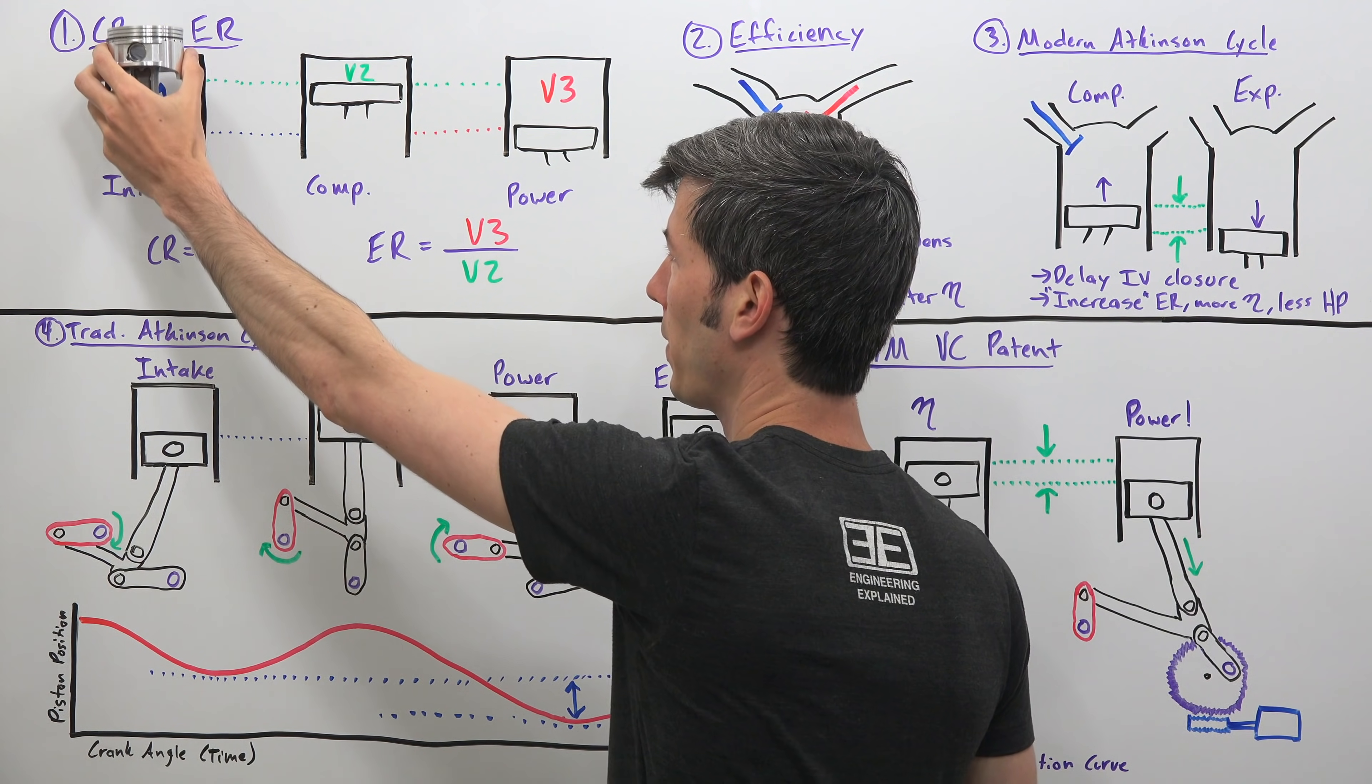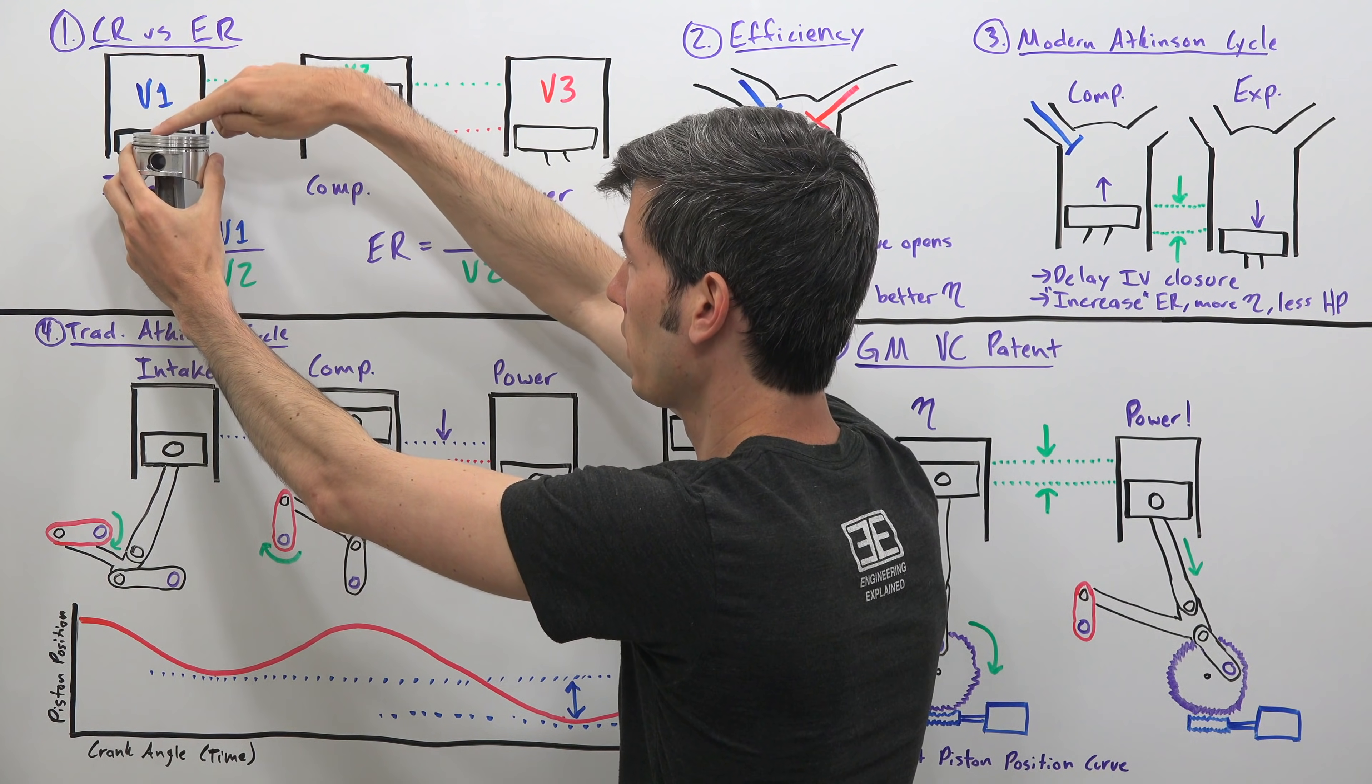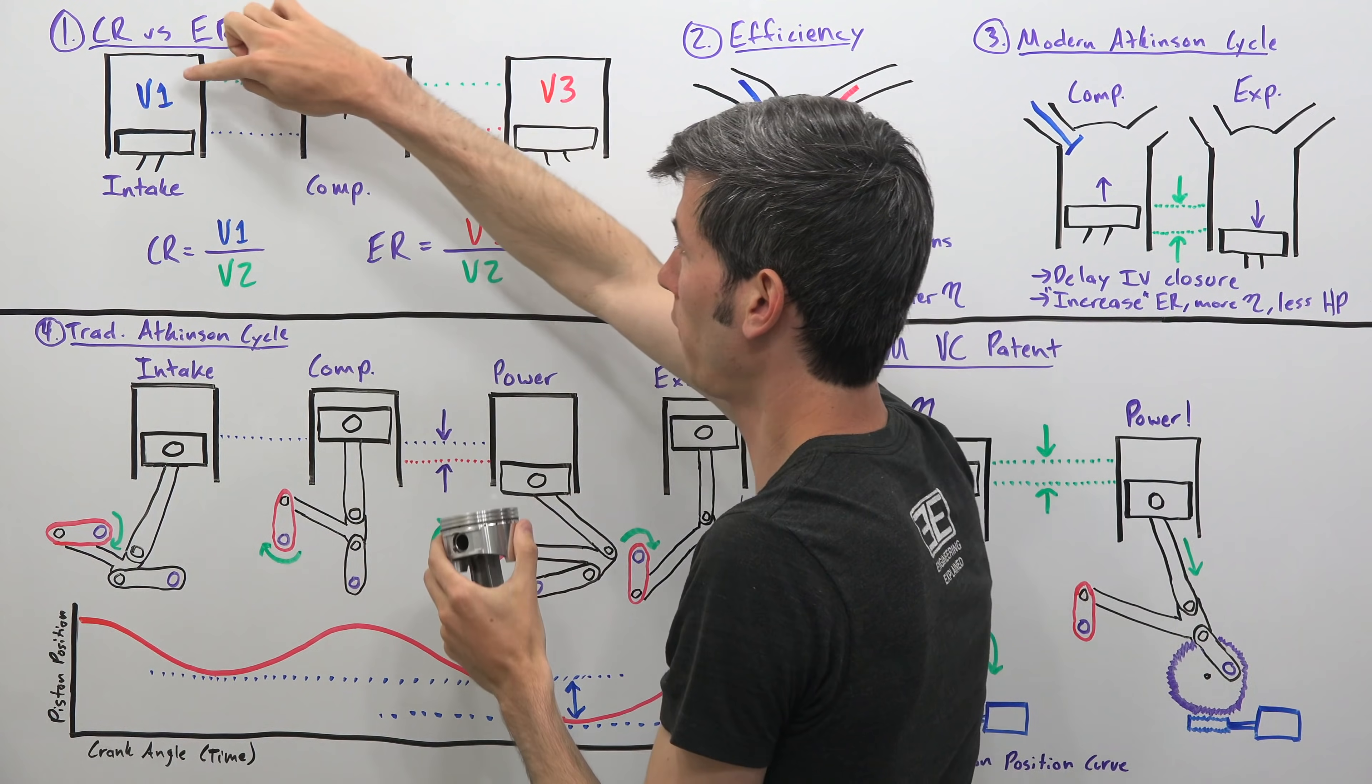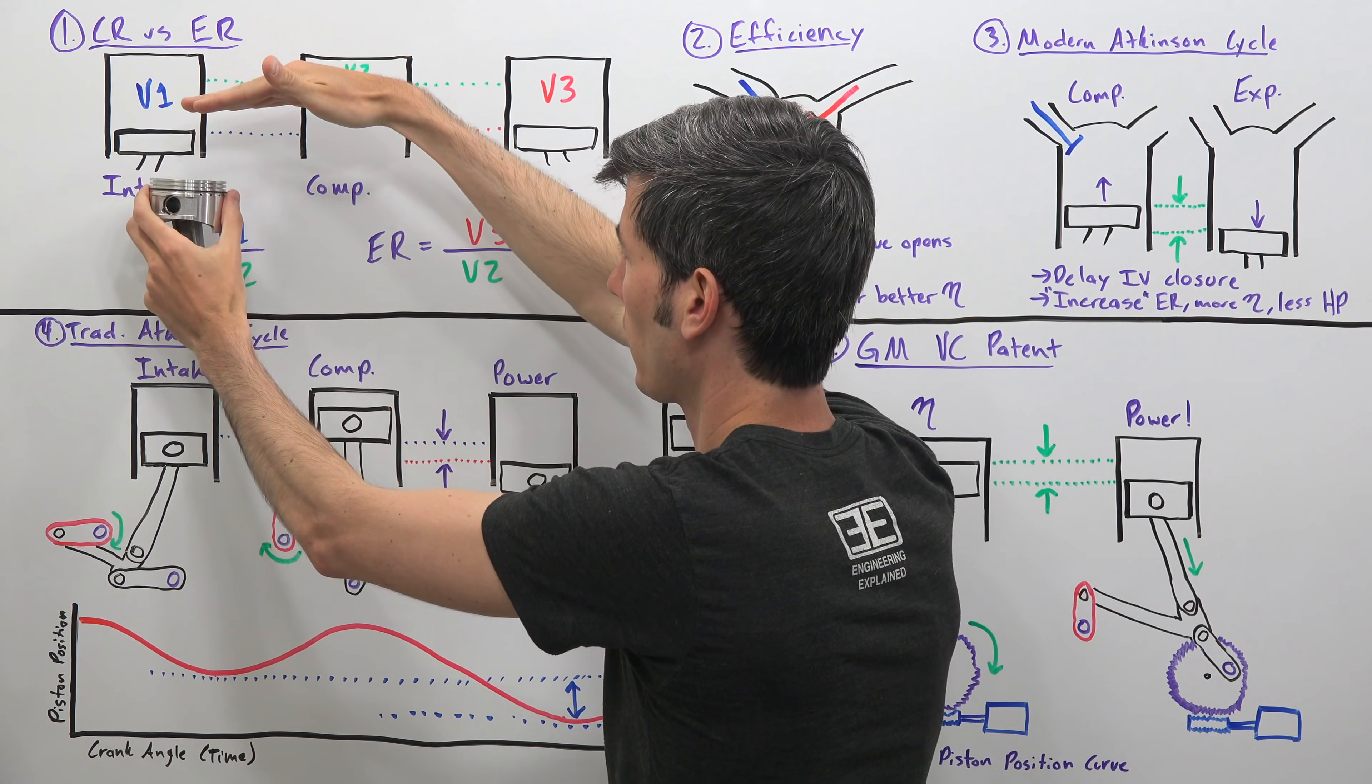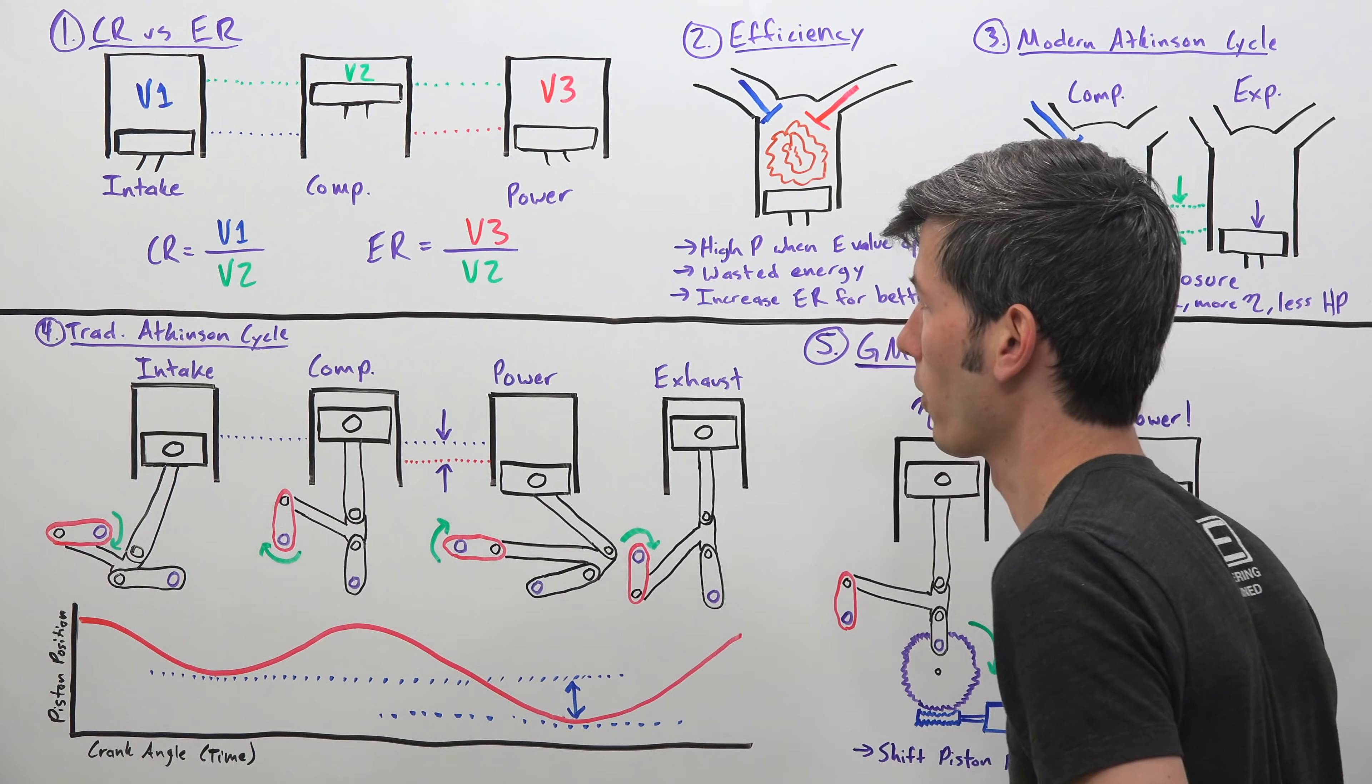So on that intake your piston moves down to the bottom. Once it's at the very bottom, the volume within that cylinder divided by the volume, once that piston goes all the way up to the very top, top dead center, V1 divided by V2, that will give you your compression ratio. So it's the volume of air with the piston at the very bottom versus the volume of air with the piston at the very top after that compression stroke.